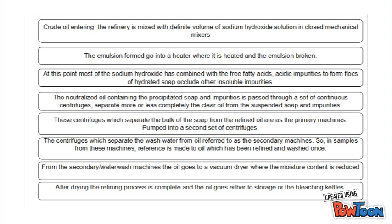The centrifuges that separate the bulk of soap from the refined oil are referred to as the primary machines, which pump oil into a second set of centrifuges. The centrifuges that separate the wash water from oil are referred to as the secondary machines. A sample from this machine — referred to as once-refined and washed oil — then goes from the secondary machine to a vacuum dryer where the moisture content is reduced. After drying, the refining process is complete and the oil goes into storage or to the bleaching kettles.